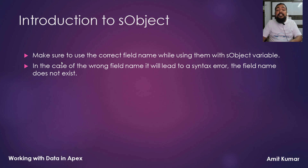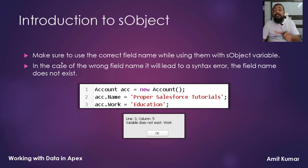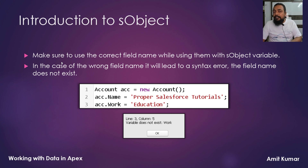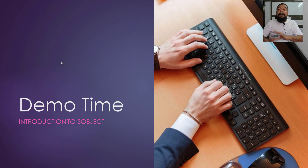If a specific field does not exist or if you have used the wrong API name, it will give you an error — a syntax error. For example, if I try to assign an education value to a work field of an Account object, but the Account object does not have any standard work field and I haven't created any custom work field, I will get a syntax error that says variable does not exist, with the variable name being work.